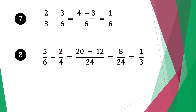Moving on to question eight, we have five over six minus two over four. We have different denominators, so we multiply six by four to get twenty-four. Twenty-four is a common factor for six and four. Twenty-four divided by six is four, four times five is twenty. Do the same for the second fraction: twenty-four divided by four is six, six times two is twelve. Twenty minus twelve is eight. Now top and bottom are divisible by eight.